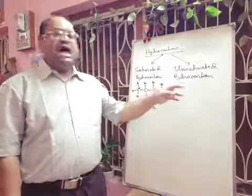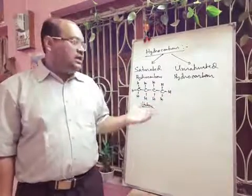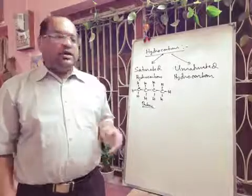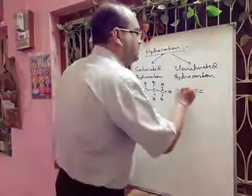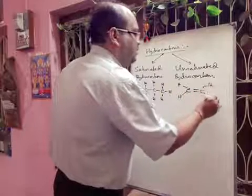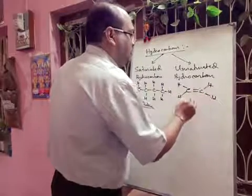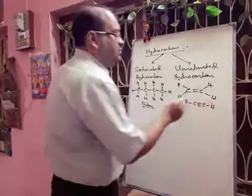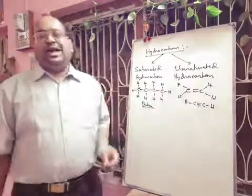Another is the unsaturated hydrocarbons. In unsaturated hydrocarbons there may be a carbon-carbon double bond or carbon-carbon triple bond. We can think about the ethylene compound — here a carbon-carbon double bond is present. Or we can think about the acetylene compound — here a carbon-carbon triple bond is present. These are all unsaturated hydrocarbons.